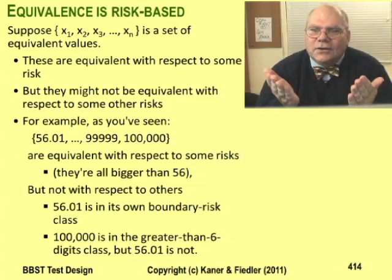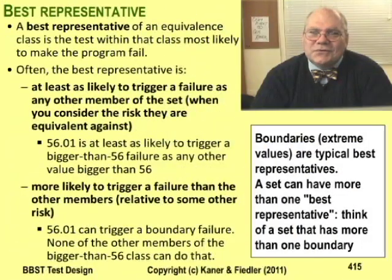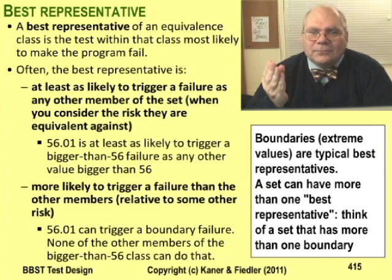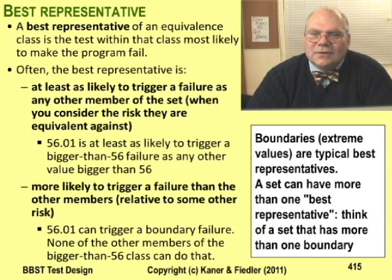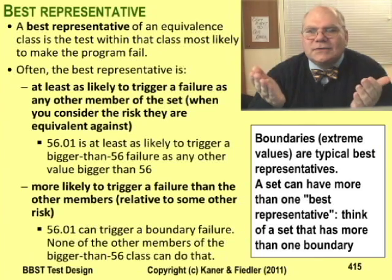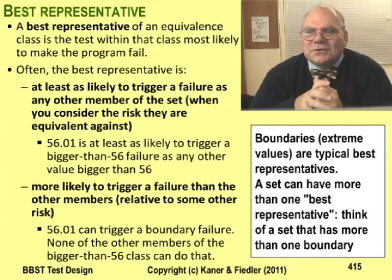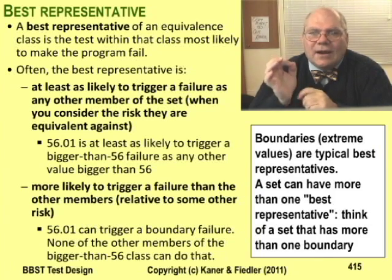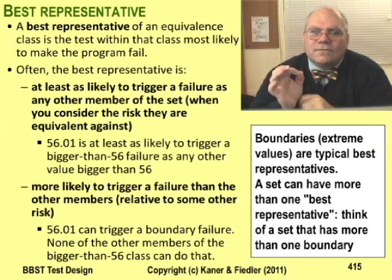That's how equivalence classes work. Two values can be equivalent with respect to one risk, but not equivalent with respect to other risks. That prepares us to consider boundaries, or more precisely, best representatives. If you have an equivalence class, the best representative of that class to test is the one most likely to make the program fail. Those are often boundary values, but not always — sometimes there are special cases to consider. We saw this with ASCII codes: the valid values were digits, whose codes are from 48 to 57, and everything else outside that range is invalid — except for the codes for space, minus sign, and decimal point. Those are deep in the invalid range, not boundary values, but special cases. You have to test them separately, because the program has to have special code for each one.